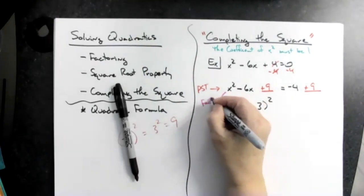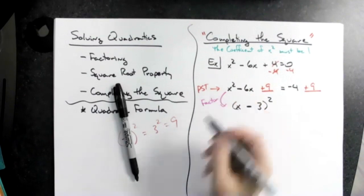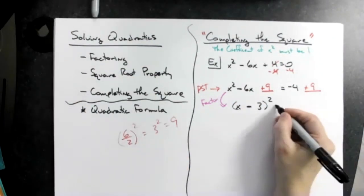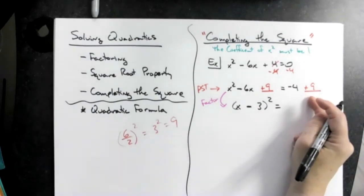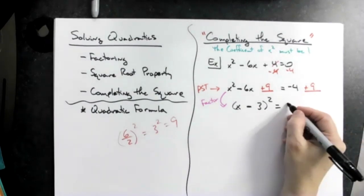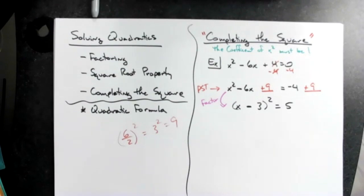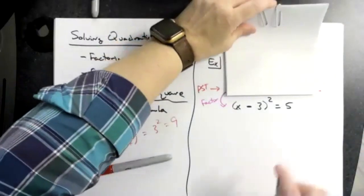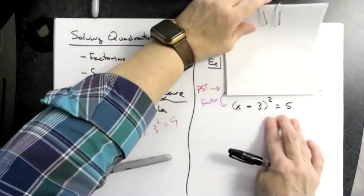All I want to do is factor that side right there. It is a perfect square trinomial so I'm going to factor. Now on the right hand side I'm just going to do the math: negative 4 plus 9 that's going to give me a 5. All right, now once you get to that line right there, if I cover up all this other stuff, doesn't that look like equations that we've been solving this whole entire time?